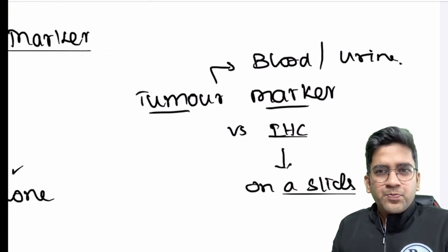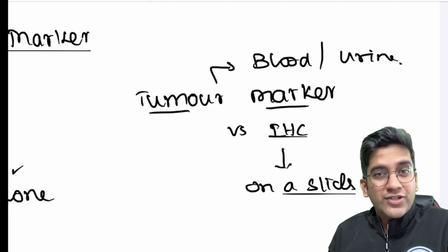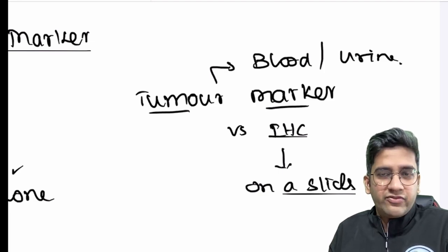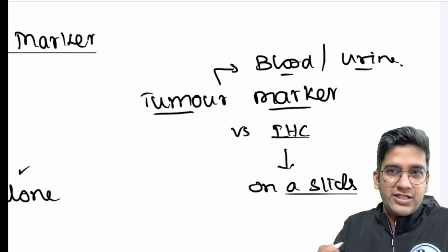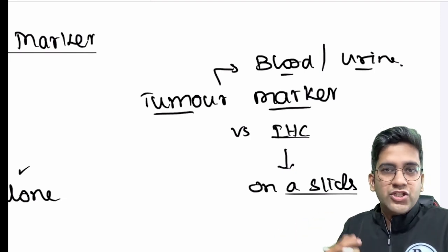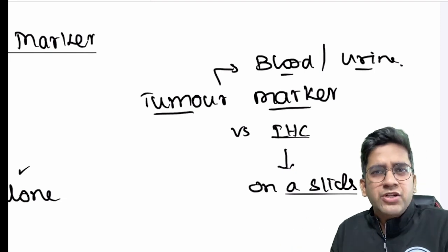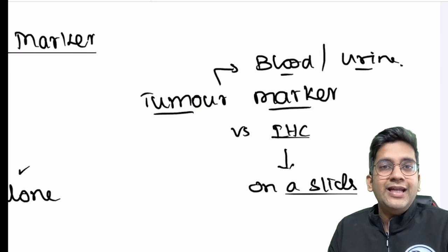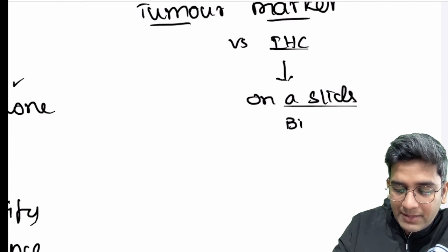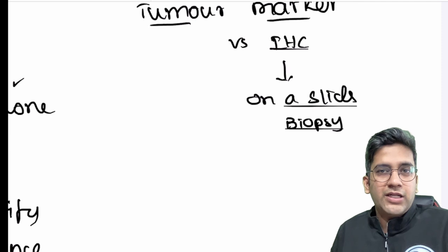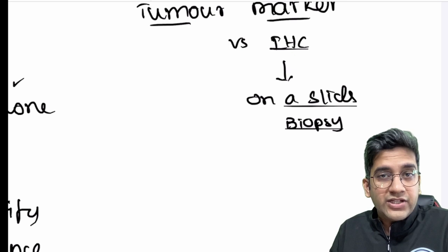The first thing to address is what is primarily the difference between a tumor marker versus an immunohistochemistry or an immunocytochemistry? It's a very basic difference. Tumor marker is something which is done on a blood or a urine. It's a blood investigation. I take a patient's blood, measure the tumor marker. Some rare instances I can take the patient's urine or a sputum or something and I can measure the tumor marker.